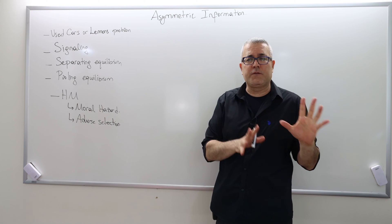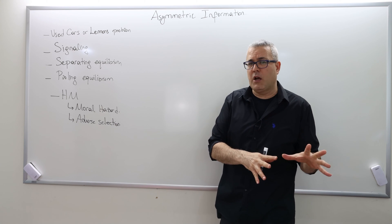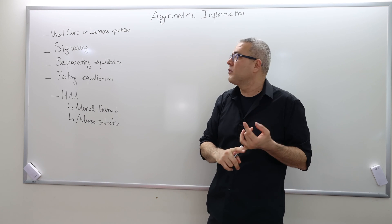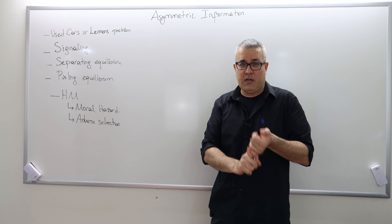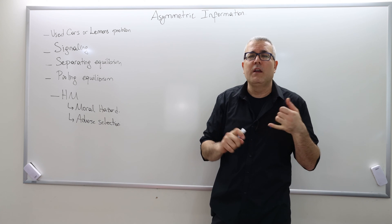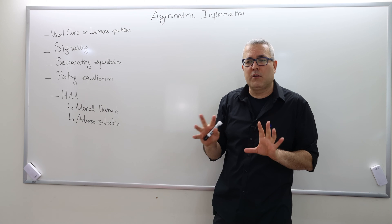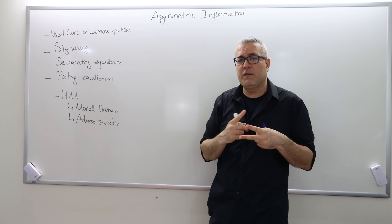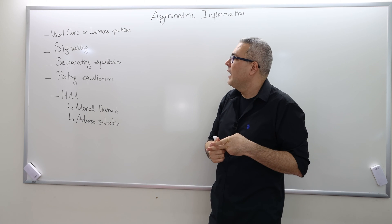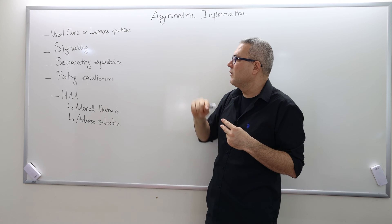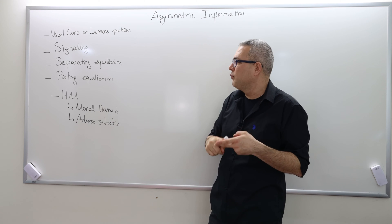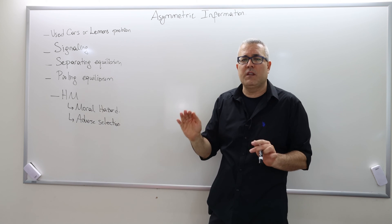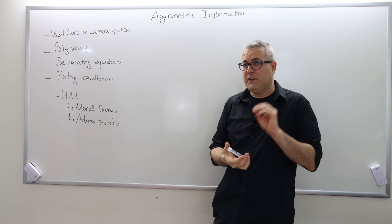The two keywords for this intermediate microeconomics course that are important: one is the used cars or the lemons problem by George Akerlof — I'm going to talk about a very simple model of his. And then I will talk about the signaling problem of Michael Spence, including separating equilibrium and pooling equilibrium. Those four keywords are the most important part of this chapter.